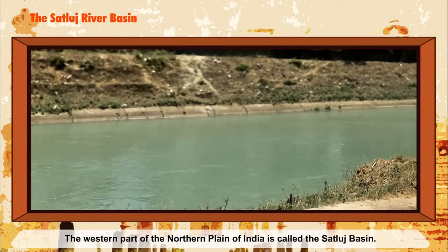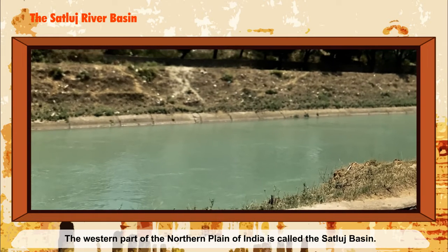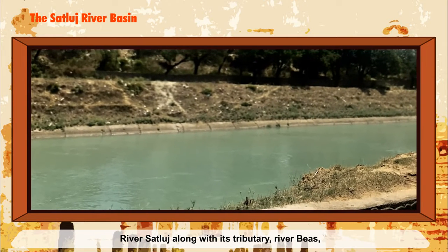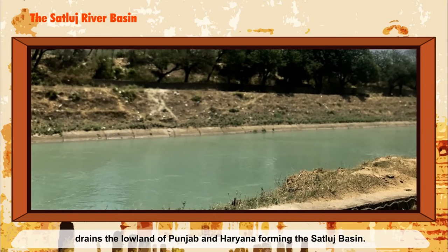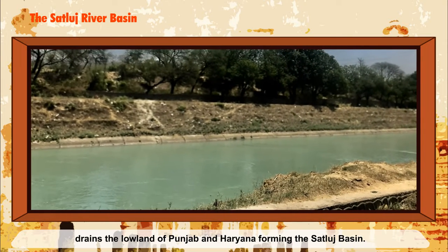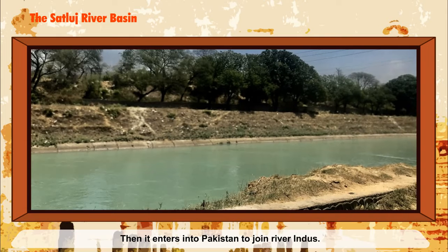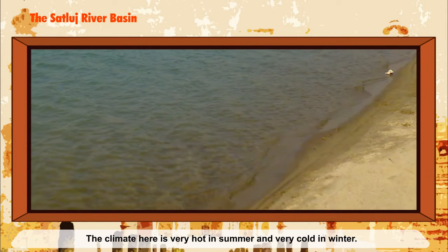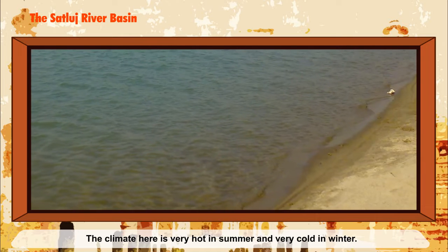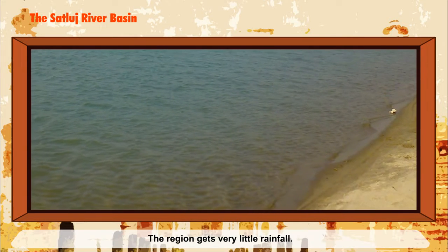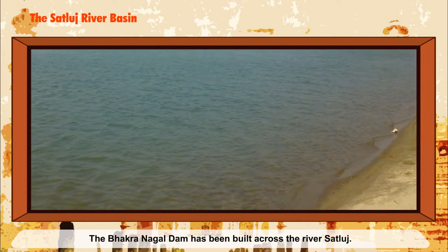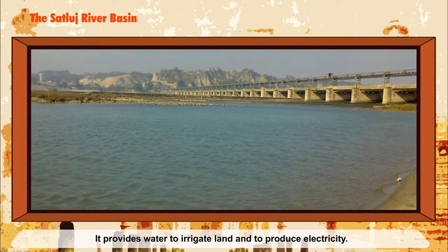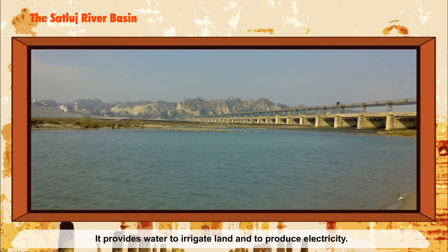The western part of the Northern Plain of India is called the Sutlej Basin. River Sutlej, along with its tributary River Beas, drains the lowland of Punjab and Haryana, forming the Sutlej Basin. It then enters Pakistan to join River Indus. The climate here is very hot in summer and very cold in winter, and the region gets very little rainfall. The Bhakra-Nangal Dam has been built across the River Sutlej, providing water for irrigation and electricity production.